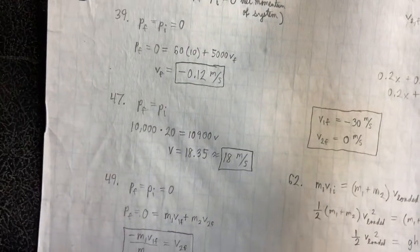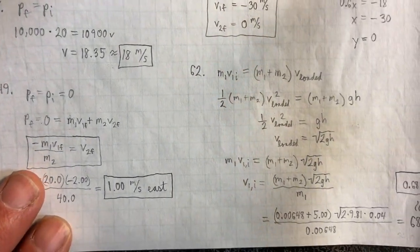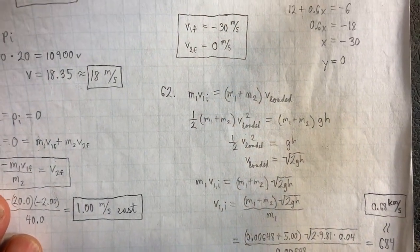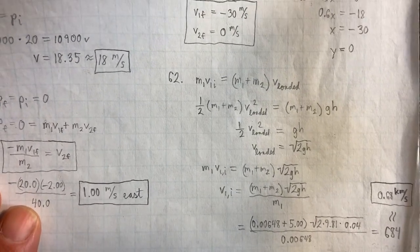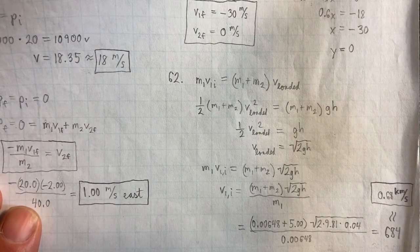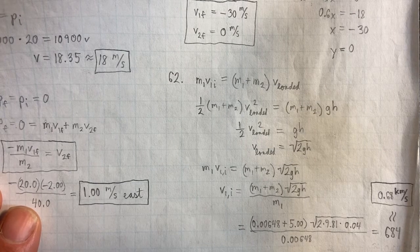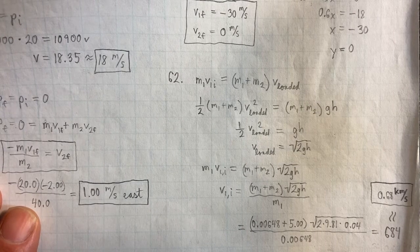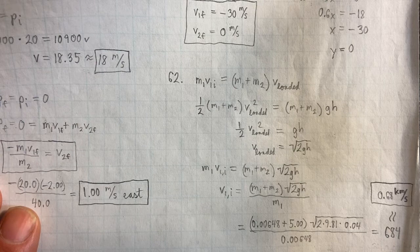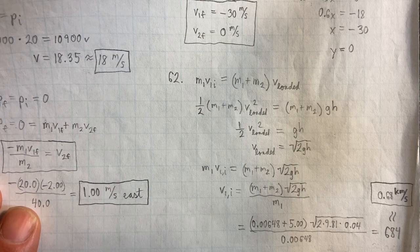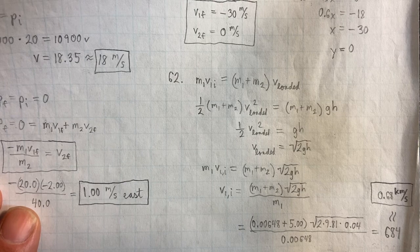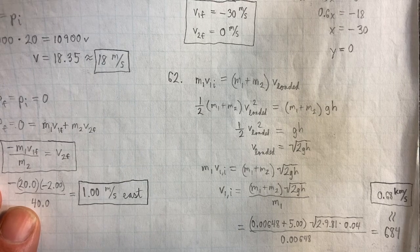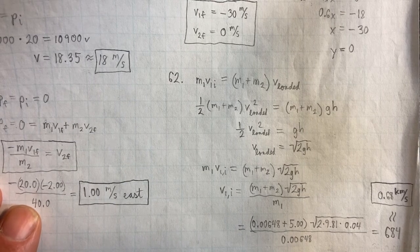Okay, now number 62 is a type of ballistic pendulum. And so, since we have a ballistic pendulum, we can use the same equation that we used in the lab. M1 V1I equals M1 plus M2 V loaded. Also, one half M1 plus M2 V loaded squared equals M1 plus M2 GH.